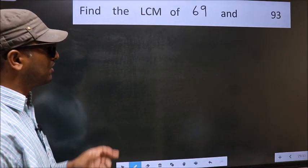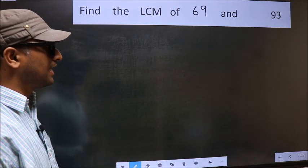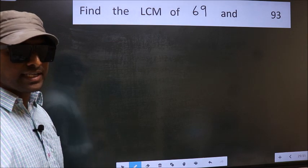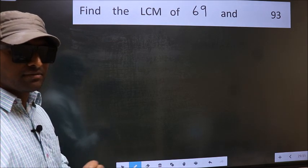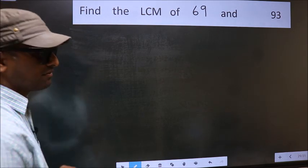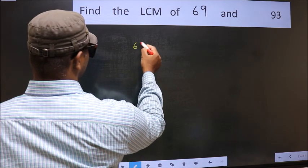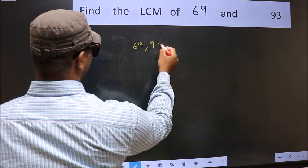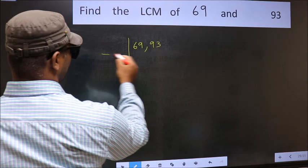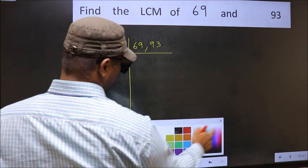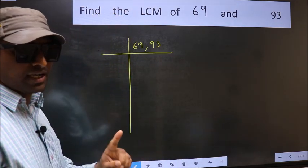Find the LCM of 69 and 93. To find the LCM, we should frame it in this way: 69, 93. This is your step 1.